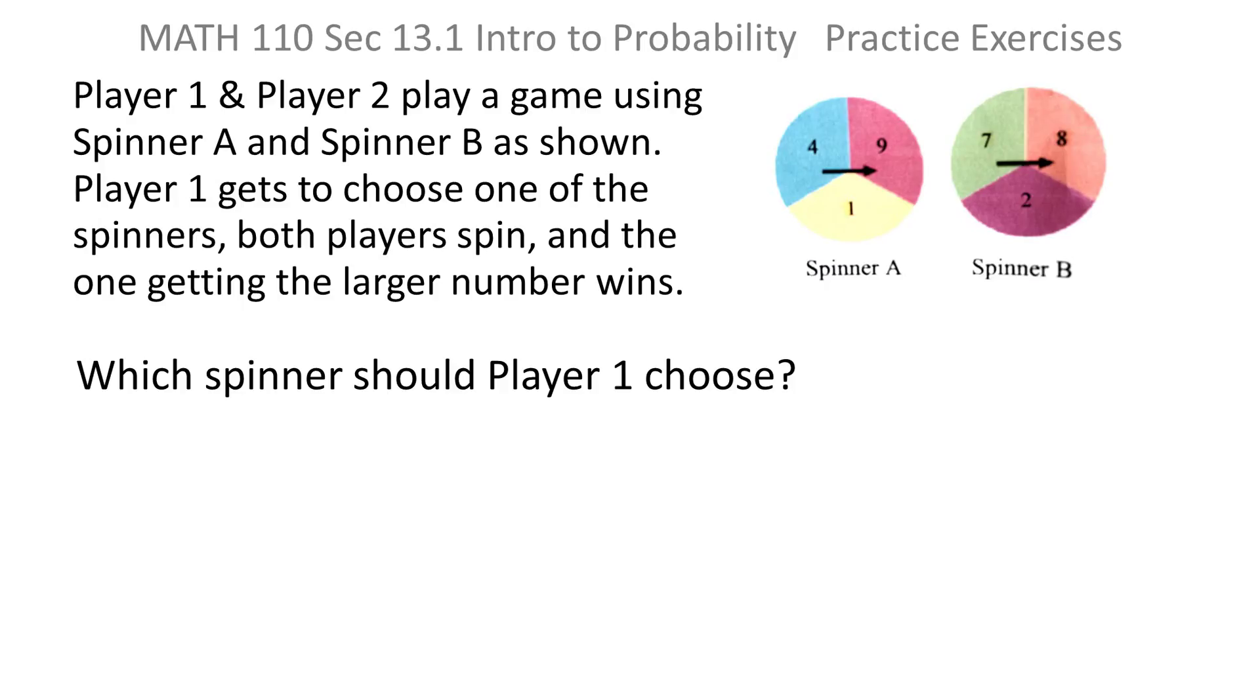Player 1 and Player 2 play a game using spinner A and spinner B as shown. Player 1 gets to choose one of the spinners, both players spin, and the one getting the larger number wins.